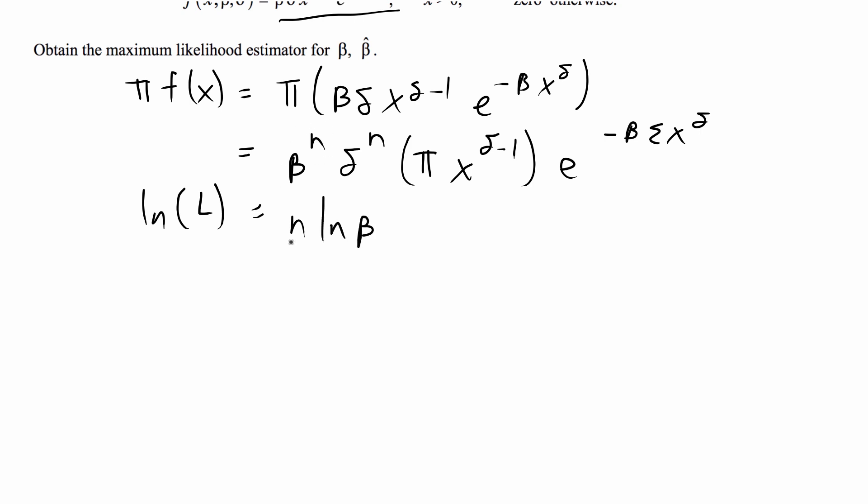This part changes to n ln beta, and then if you multiply natural logs that's the same as adding them, so this is going to be plus the natural log of this part which is going to simplify as n ln delta. And then this part is going to change - you can bring this part down so it's going to be delta minus 1 times the sum of ln x. That's kind of combining a couple of steps together, hopefully that makes sense the transition from one to the other.